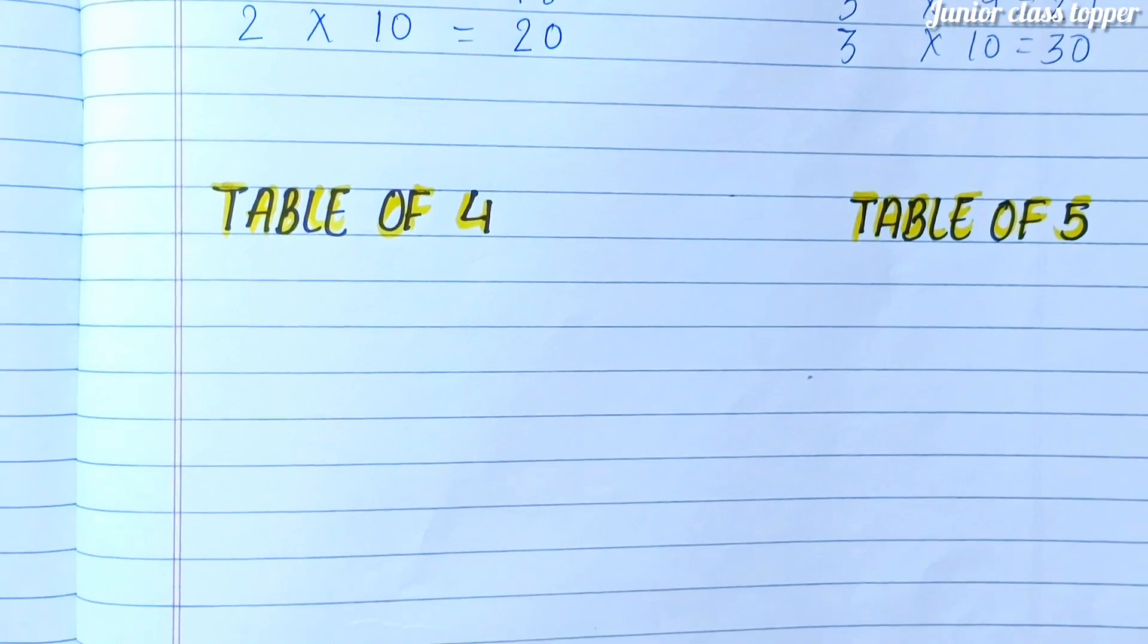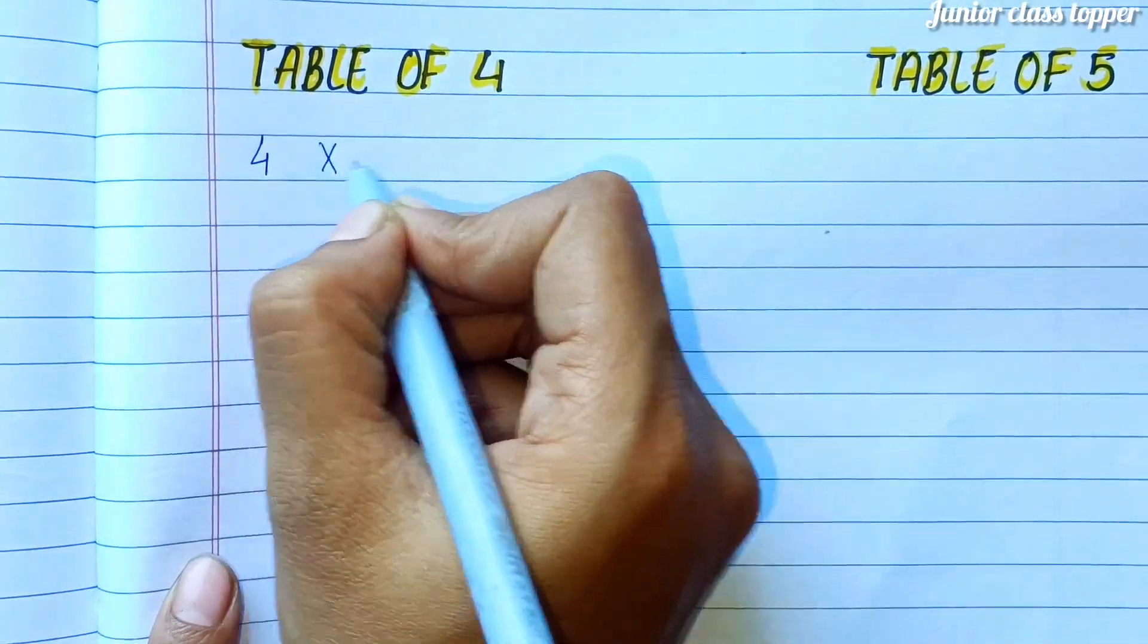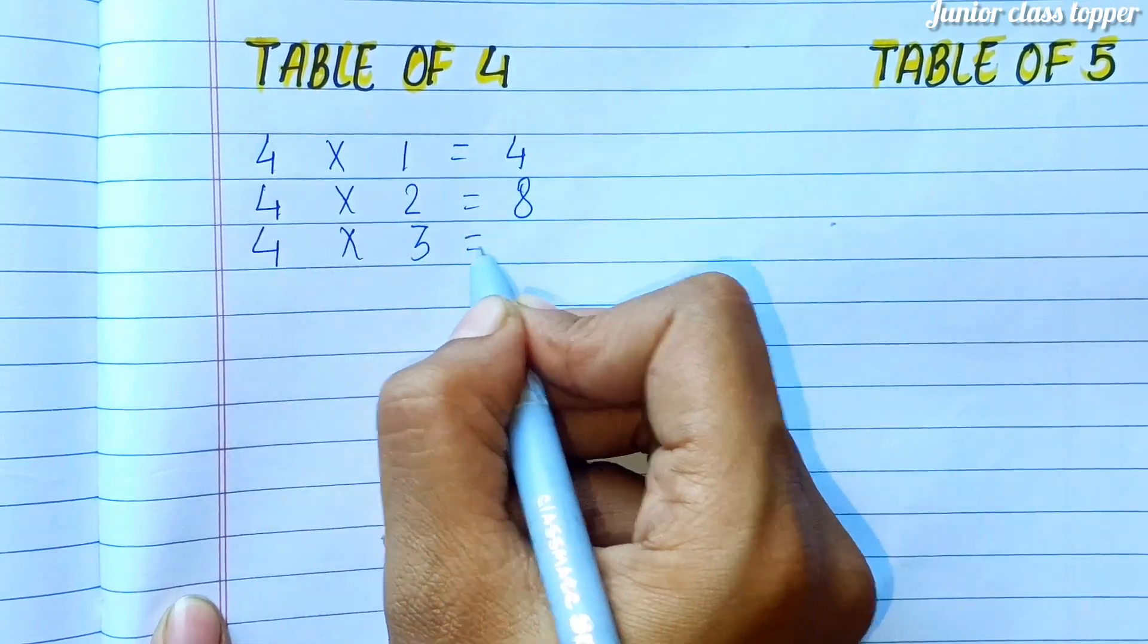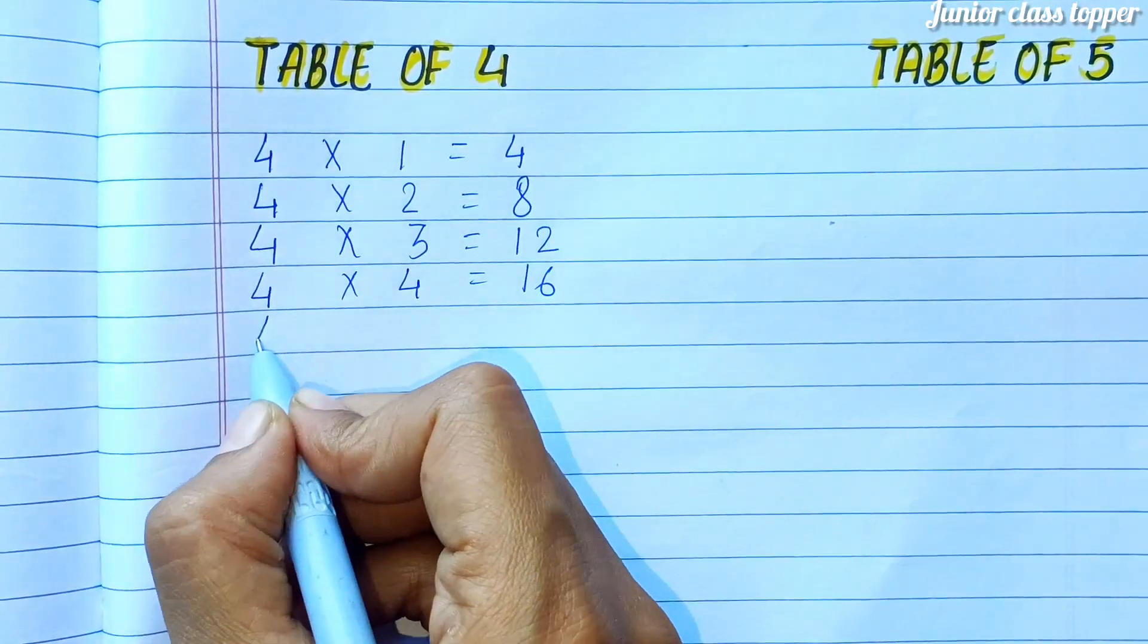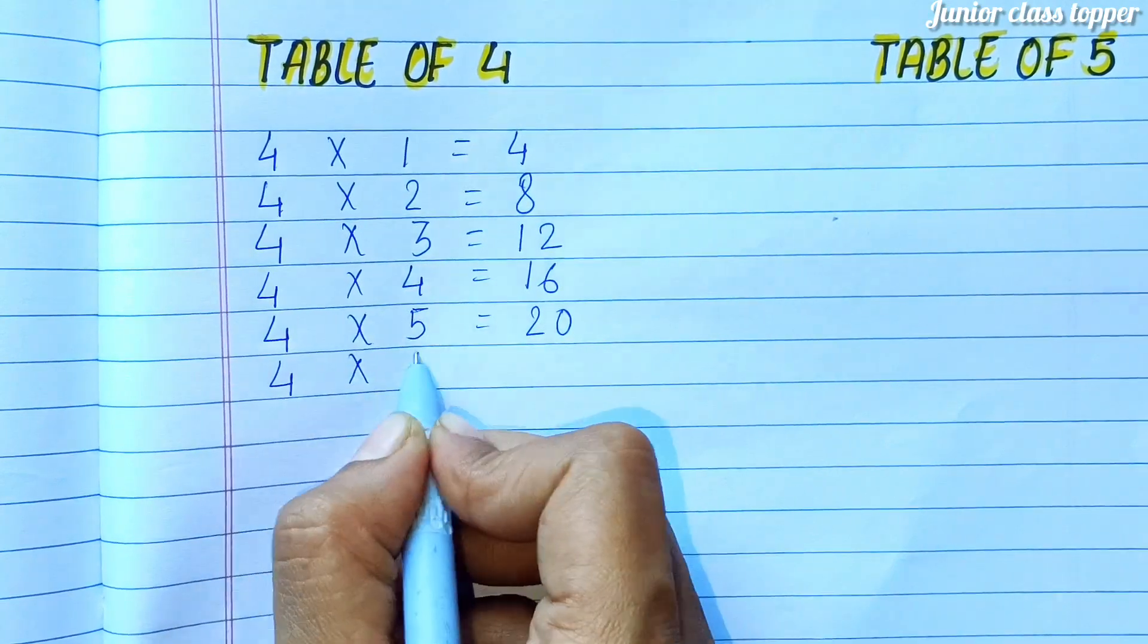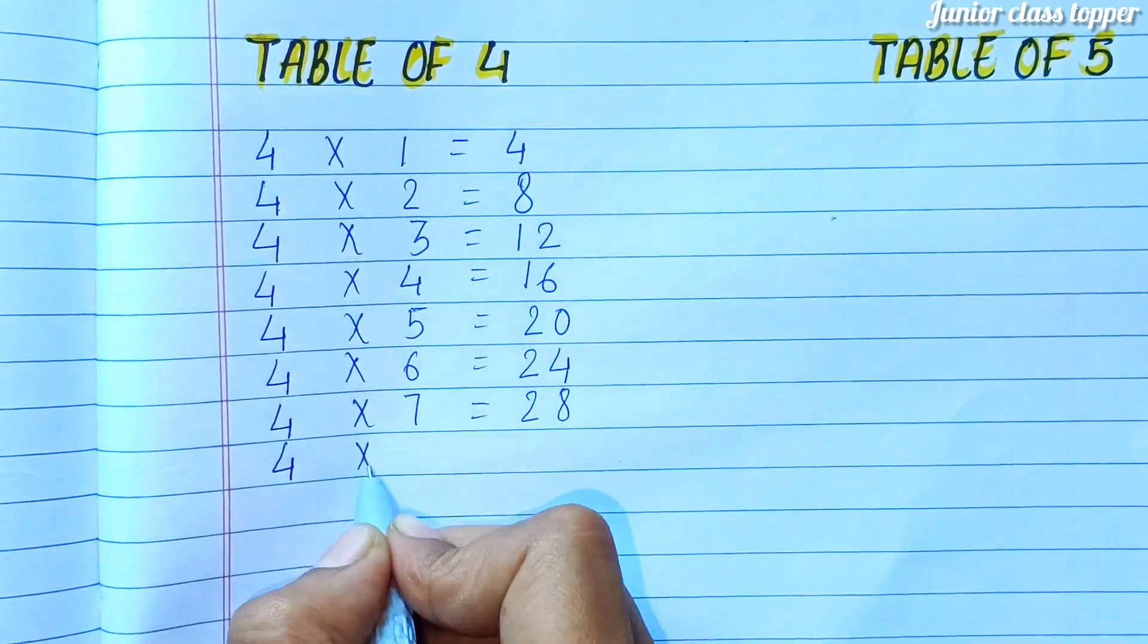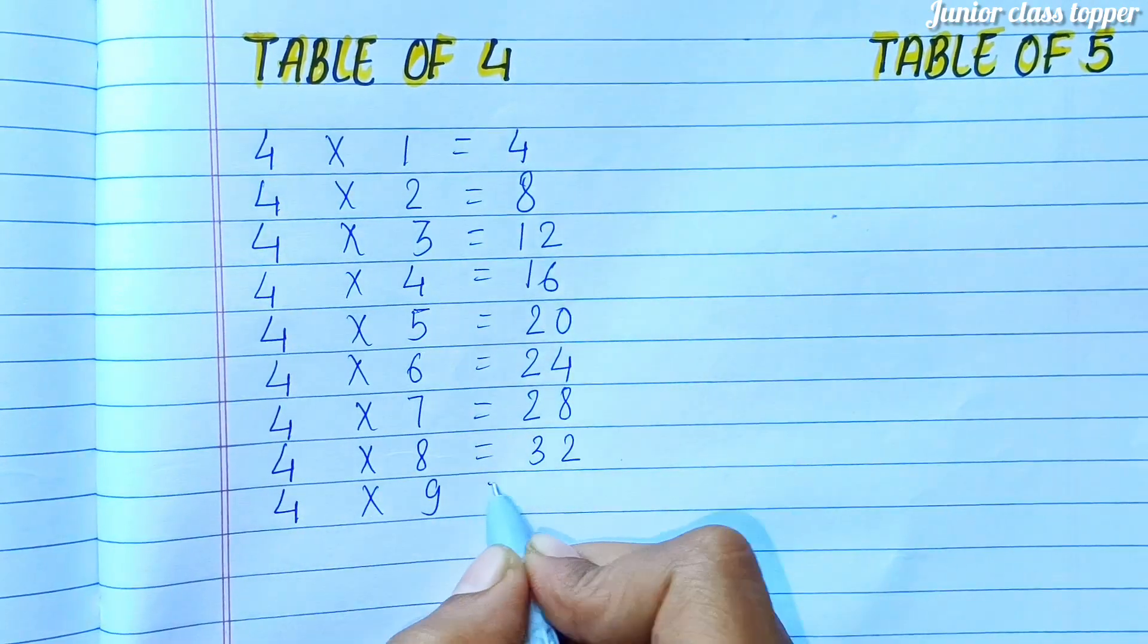Table of Four. Four ones are four. Four twos are eight. Four threes are twelve. Four fours are sixteen. Four fives are twenty. Four sixes are twenty-four. Four sevens are twenty-eight. Four eights are thirty-two. Four nines are thirty-six. Four tens are forty.